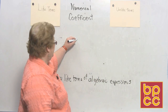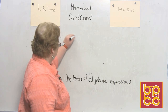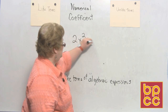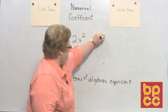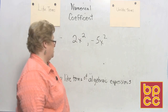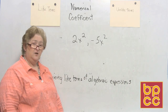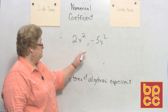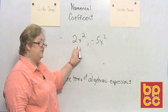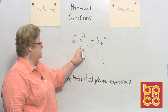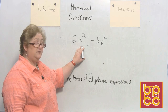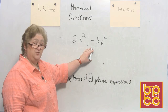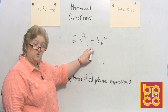Let's say I have 2x squared and negative 5x squared. Those are like terms. I can add, subtract, multiply, and divide them, because even though the coefficient is not the same, the variable is the same — it's x — and those x's are both being squared. So those are like terms.